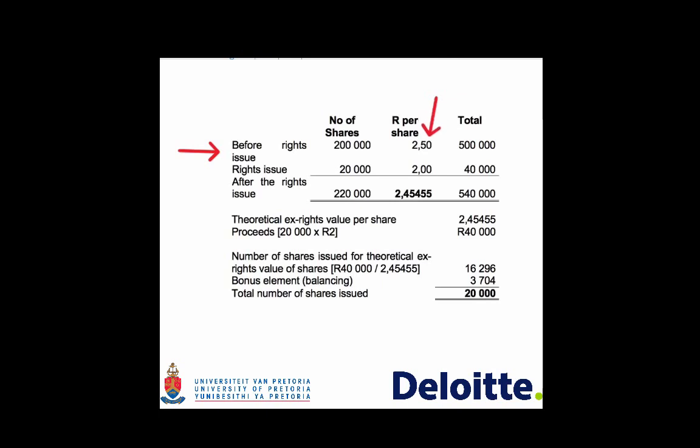In terms of the rights issue, 20,000 shares will be issued at R2.00 per share, which is lower than the fair value of R2.50. The theoretical ex-rights value per share is calculated by using the total of R540,000 divided by the total number of shares of 220,000. This theoretical ex-rights value is then used to calculate how many shares would have been issued if they were issued at the ex-rights value.